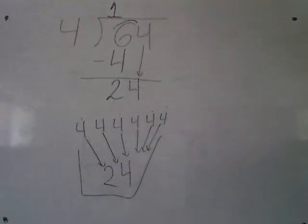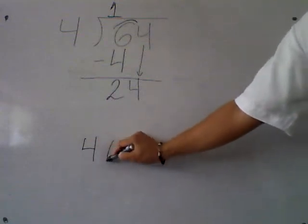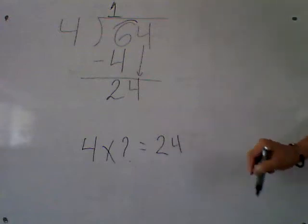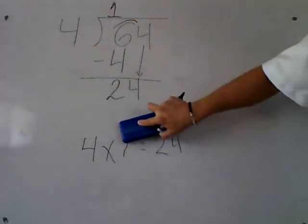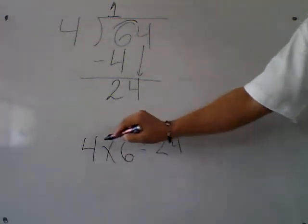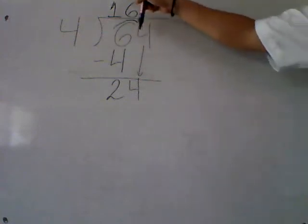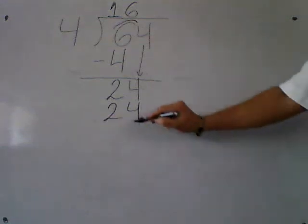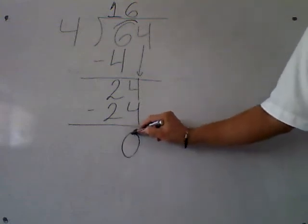So 6 times 4 is 24. What number times 4 is 24? 6. 6 times 4 is 24. Write the answer: 6. Next step — subtraction: 24 minus 24 is 0.